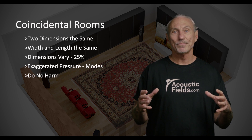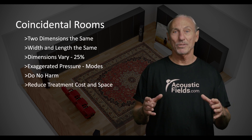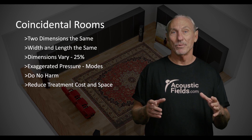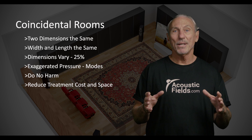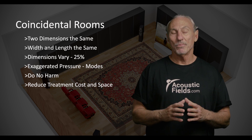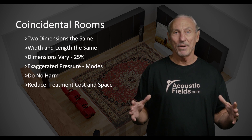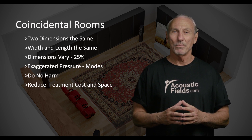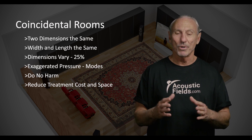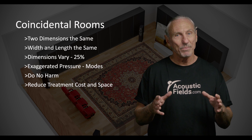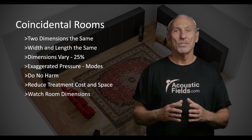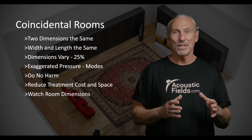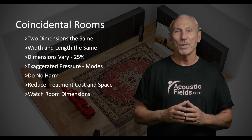Varying dimensions reduces our cost for treatment and reduces the amount of space we need for treatment. The bottom line is try to find rooms that have dimensions that vary. 25% is a good number to aim for. We can get away with less, but try to find dimensions that vary by 25% so that we're not increasing our unwanted low frequency pressure issues.